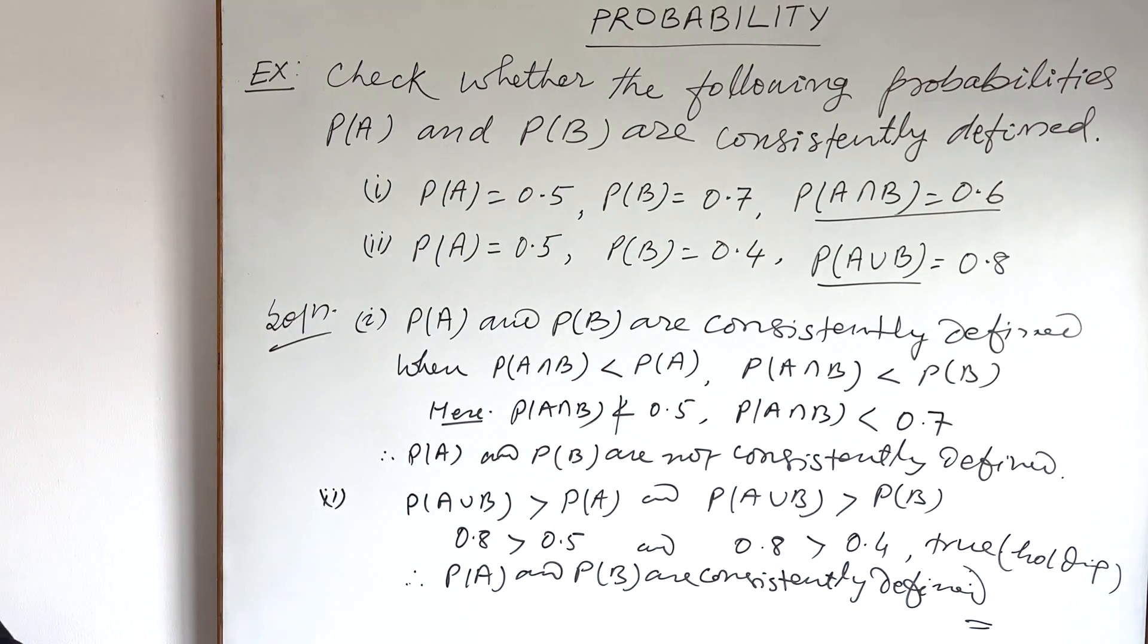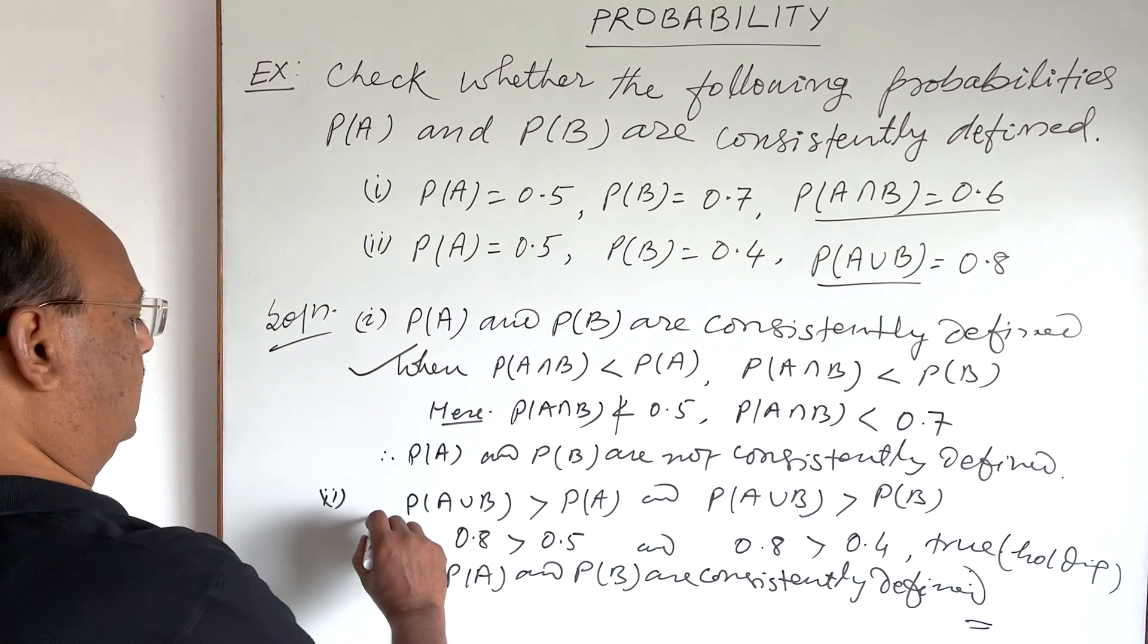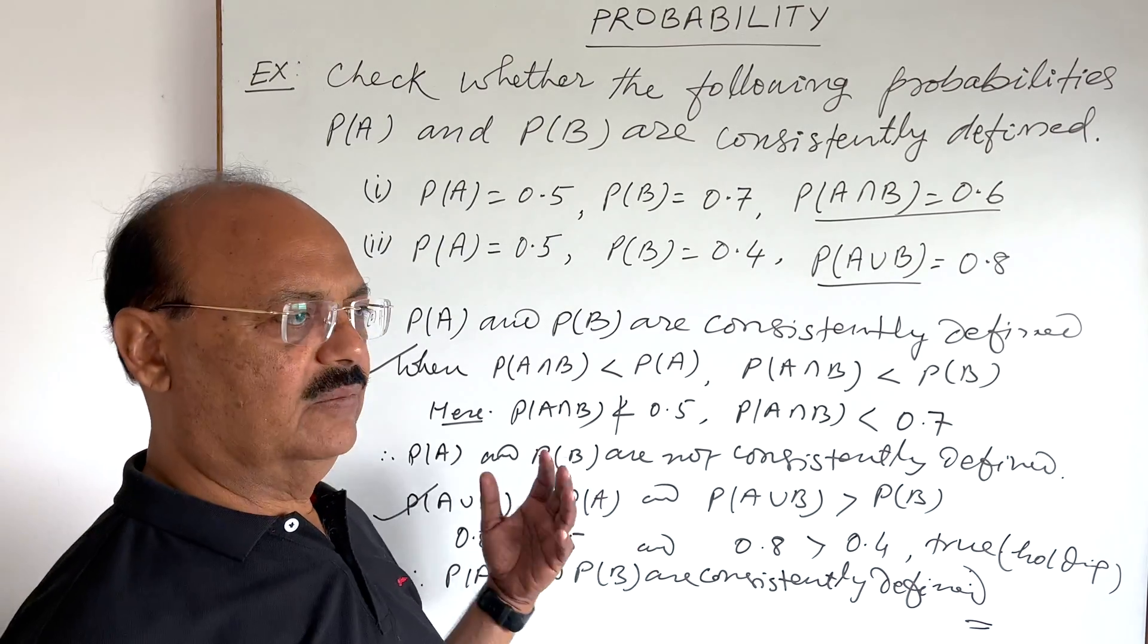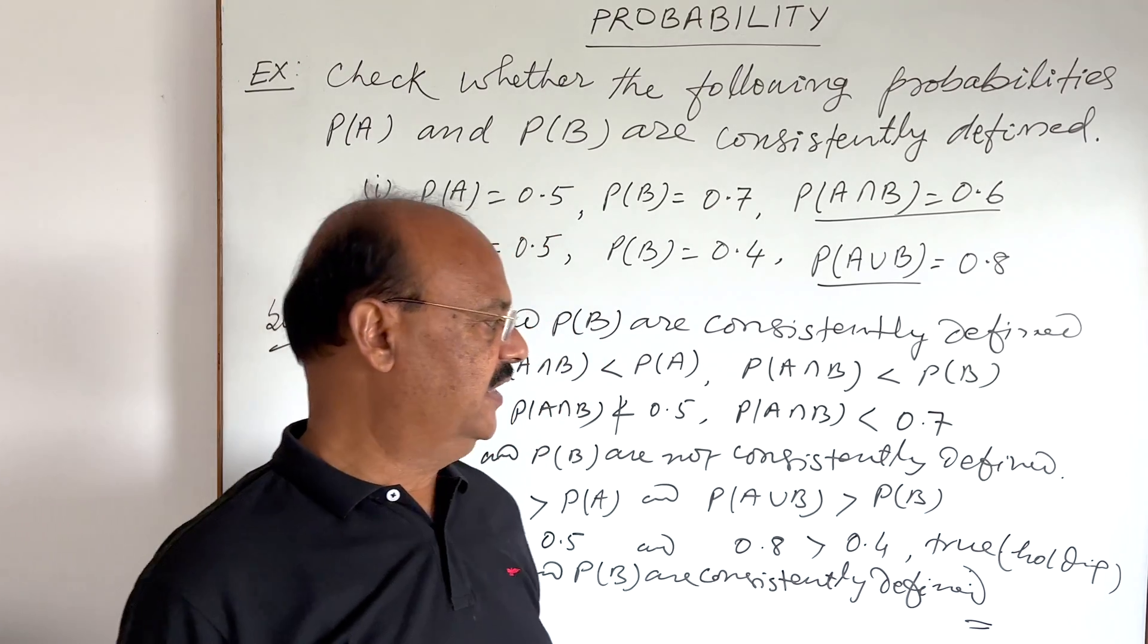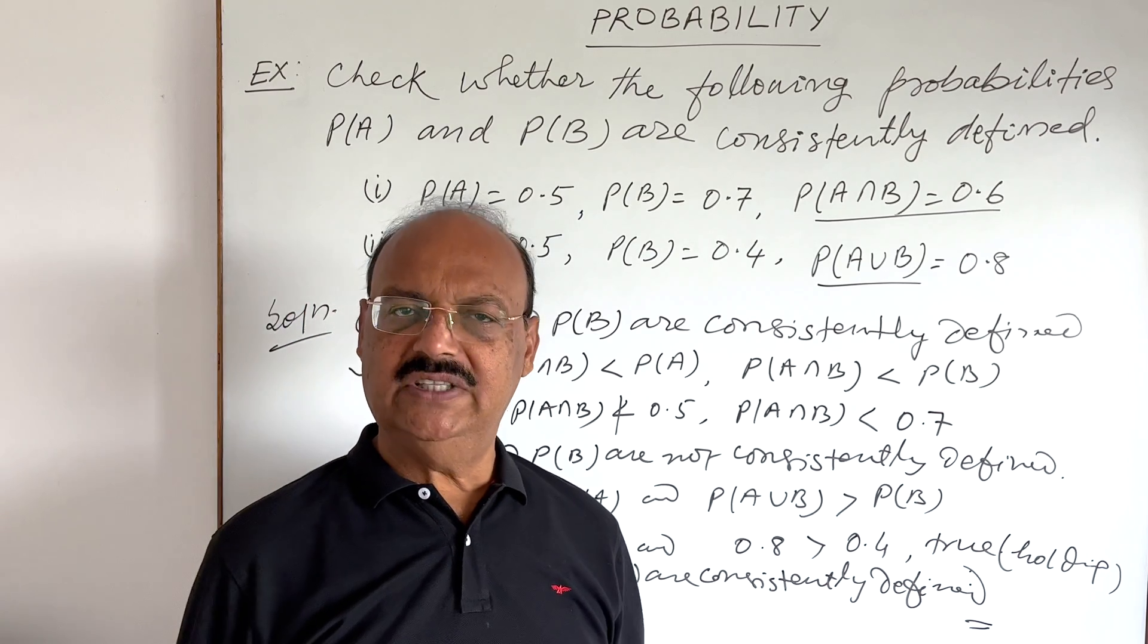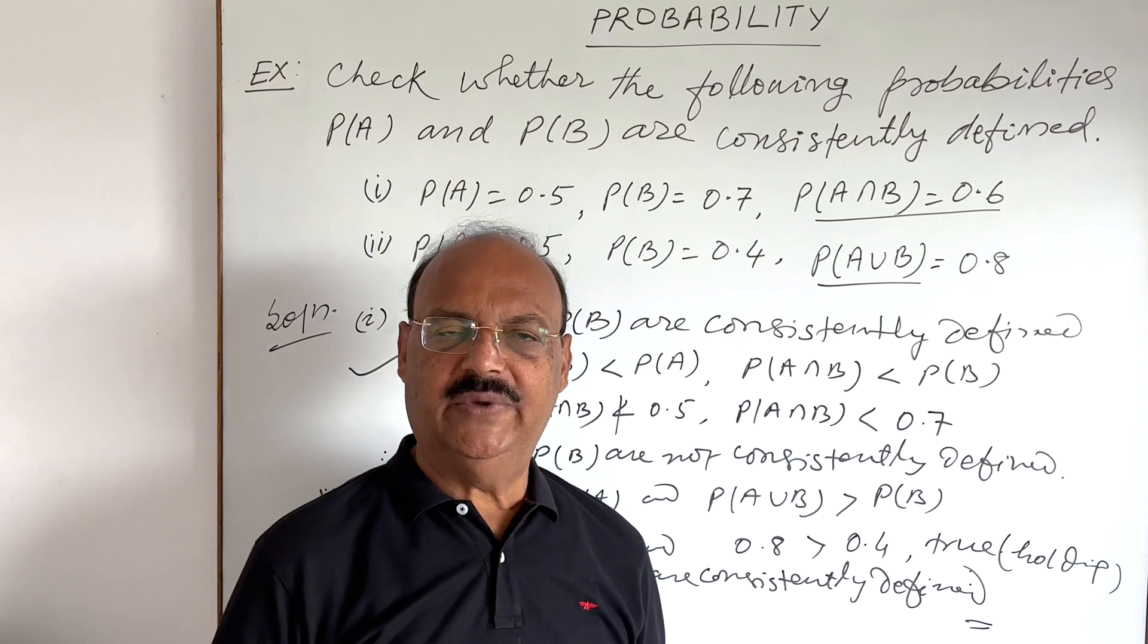Okay? So, very simple. Just we need to know these criterions. We can decide very easily that whether P(A) and P(B) are consistently defined or not. So, question is very simple. You might have understood it. So, remain in touch with these videos and the channel so that we could get maximum benefit of it.